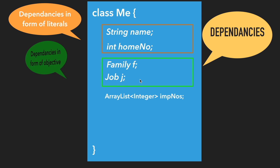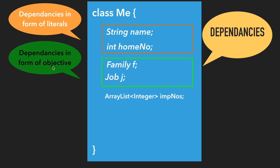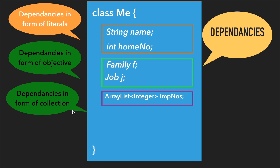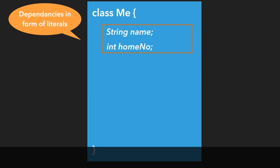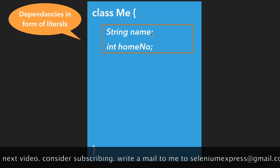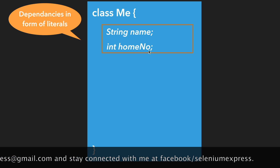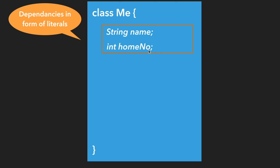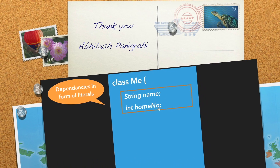And importantNumbers is of ArrayList type — ArrayList is a collection class — so this kind of dependency is called a dependency in the form of collections. So dependencies can be in the form of literals, objectives, or collections. Today in this tutorial we are only going to concentrate on dependencies in the form of literals, and we'll see how to inject them using setter injection and constructor injection with Spring Framework.